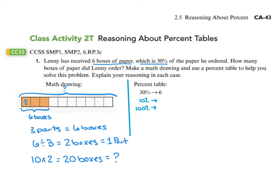If we were to do this with a percent table, we would want to start with that we know 30% is equivalent to six. To go from 30% to 10%, we divide by three. So I have to divide six by three, which gives me that 10% is equal to two. And to go from 10% to 100%, I multiply by 10. So two times 10 is going to give me 20. So 20 boxes is equivalent to 100%. And that's how we can use the percent table to do the same type of problem.